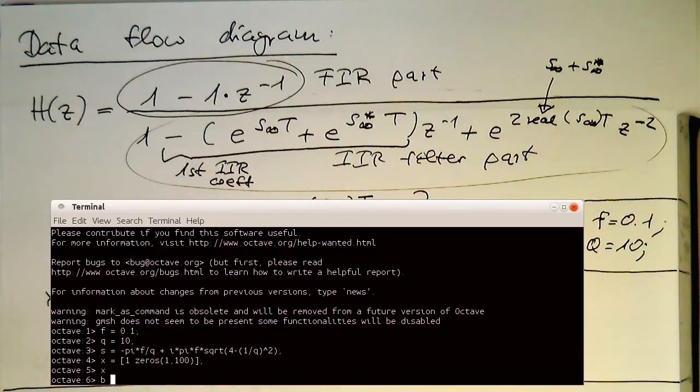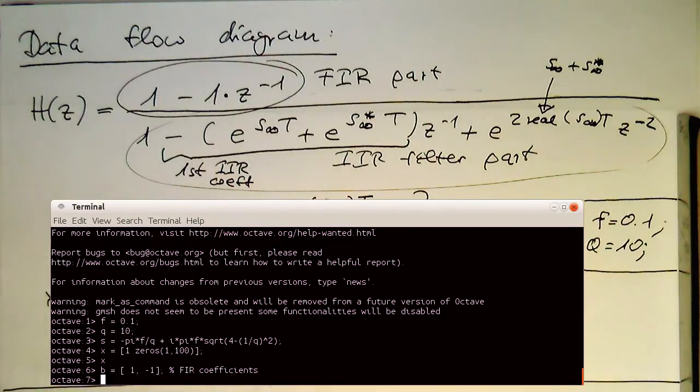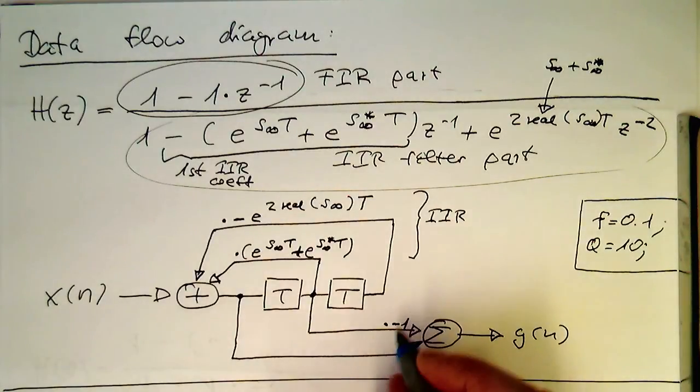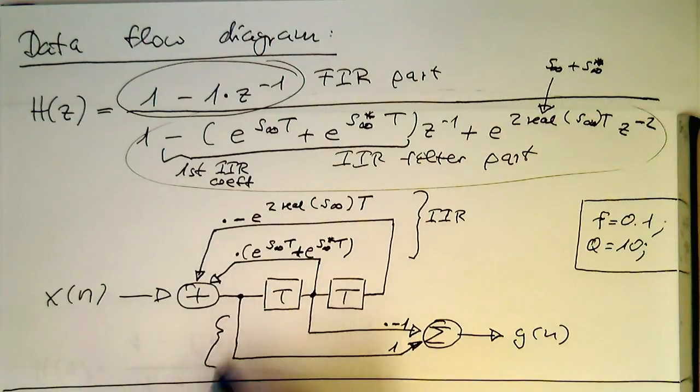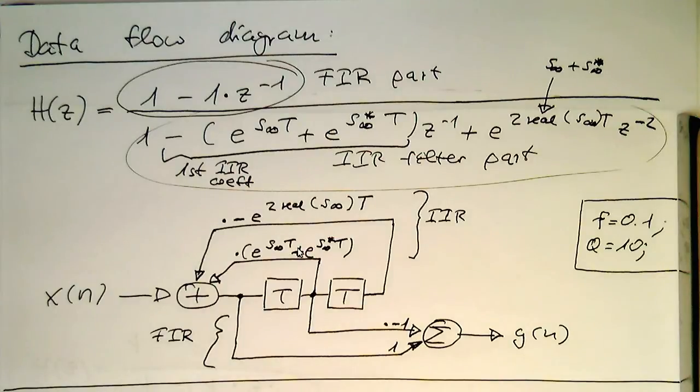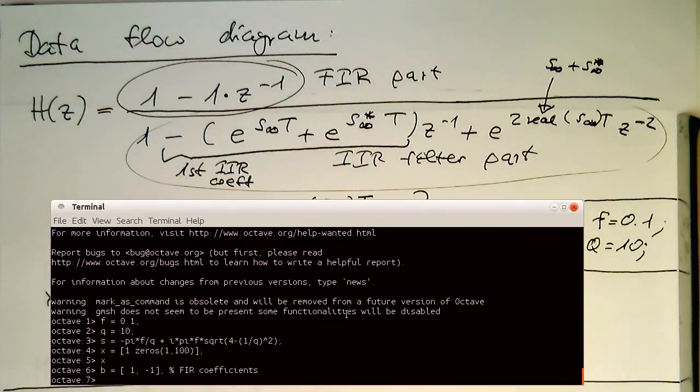So with that, now we can put our coefficients in convenient vectors here. So these are our FIR coefficients. And the FIR coefficients are just our minus 1 and so 1 here. And I should add this here. That's our FIR part. So let's go back to our octave window here. So these are our FIR coefficients.